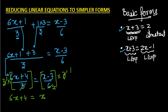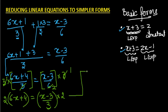Now we want to get rid of the 2 on the right-hand side, so we multiply both sides by 2. This gives us 2(6x + 4) = x − 3, since the 2s cancel out. We have now reached the basic form where there is a simple linear expression on both sides of the equality.